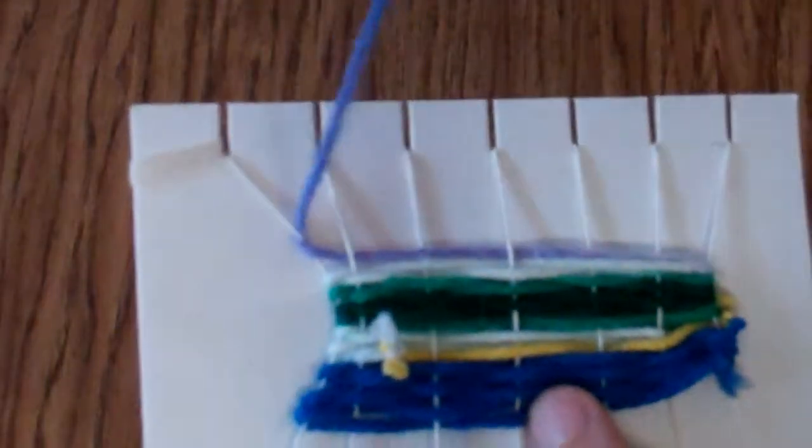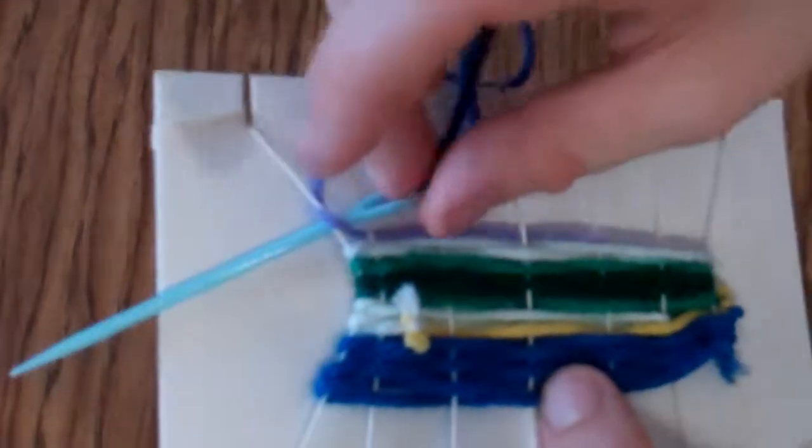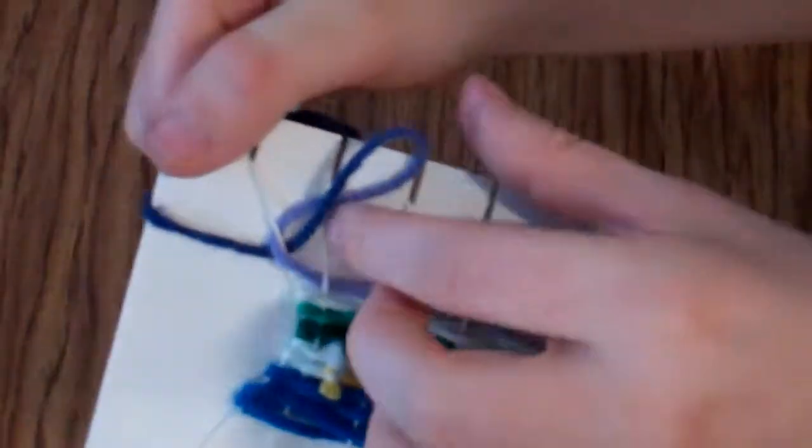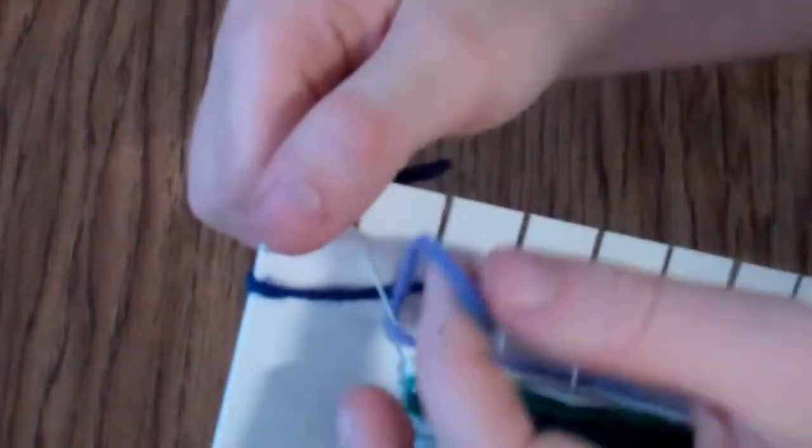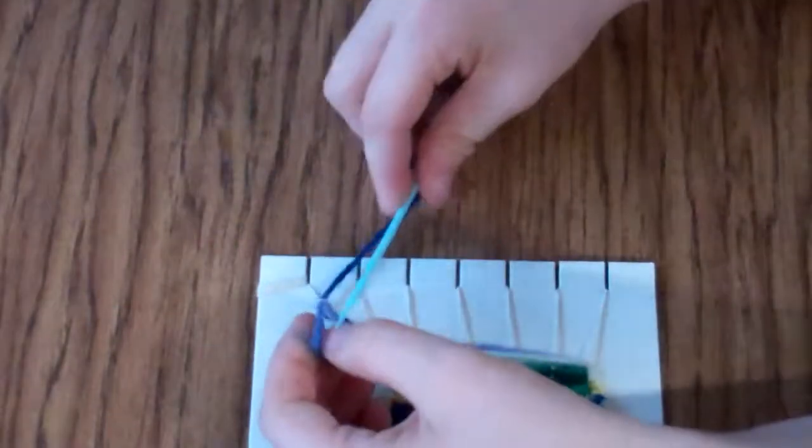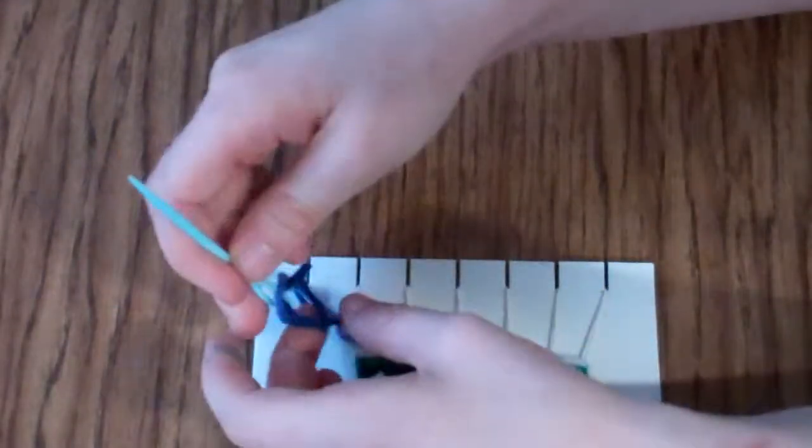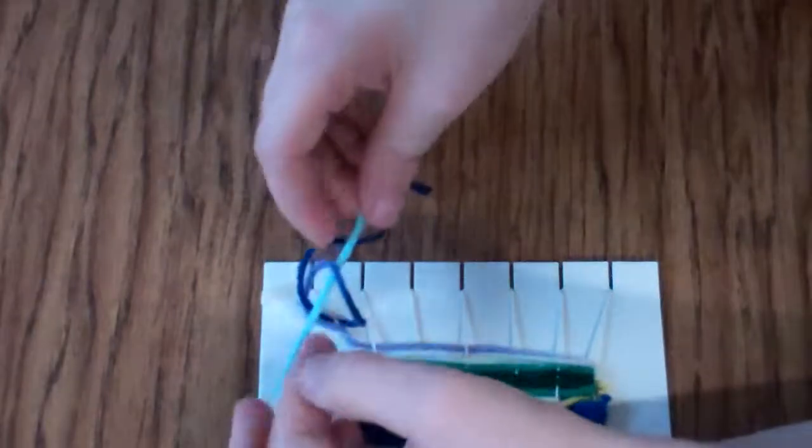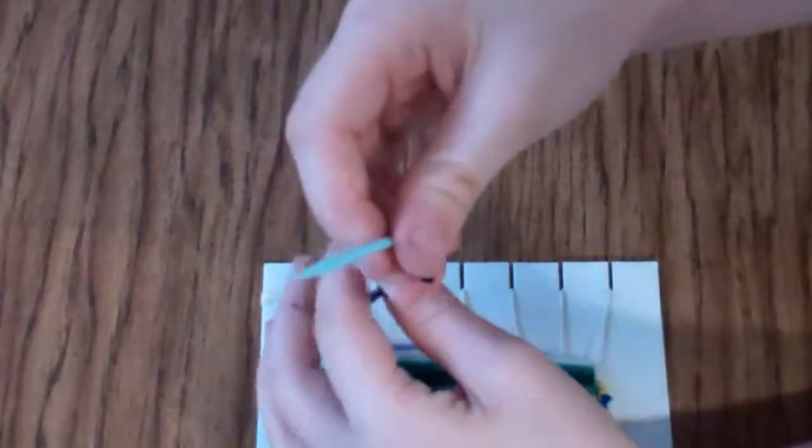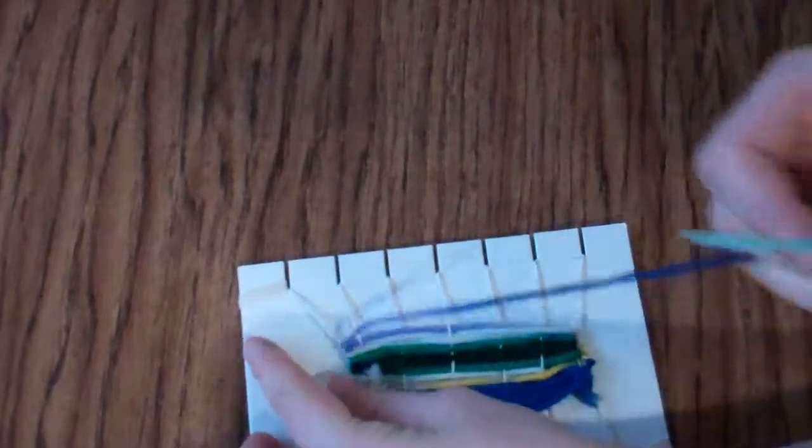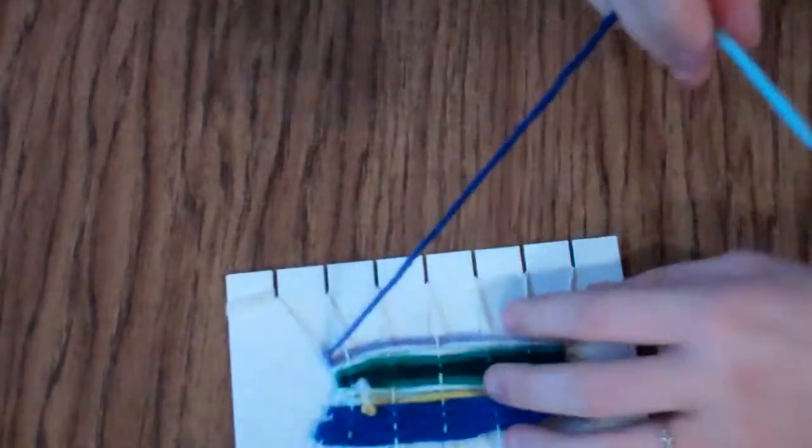On my last string, I'm going to take my needle and loop it under, but I'm not going to pull all the way. I'm going to leave it so I have a little loop. Then I'm going to take my needle and go through that loop twice. I'm going to pull it up and then it's going to knot right on that string.